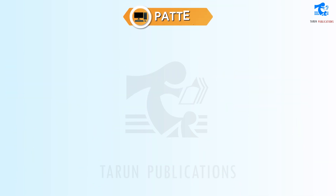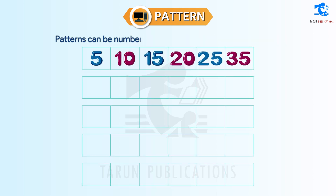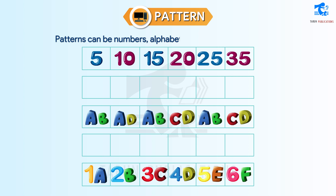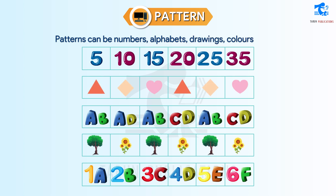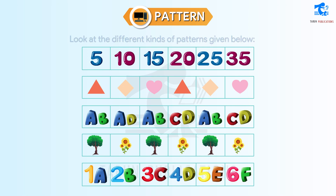Pattern. A pattern is a repeated arrangement of designs or text. Patterns can be numbers, alphabets, drawings, colors, etc. Look at the different kinds of patterns given below.